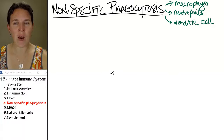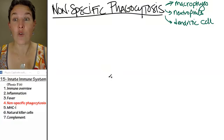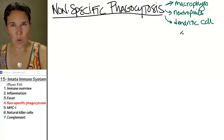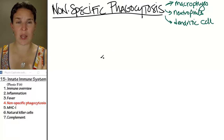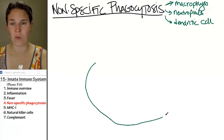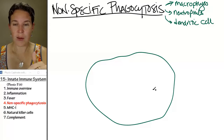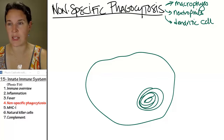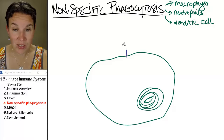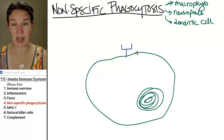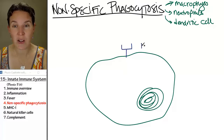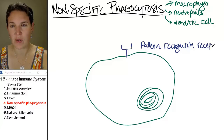You should probably be wondering how these phagocytes know when a bad guy is a bad guy versus when it's just one of your own cells that has gone rogue. Our phagocytes have special receptors embedded in their cell membrane called pattern recognition receptors, also known as PRRs.